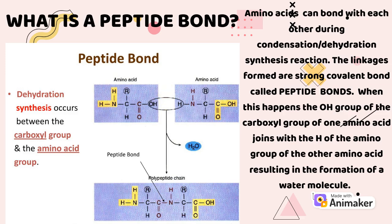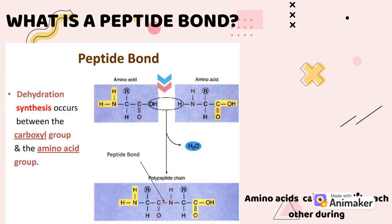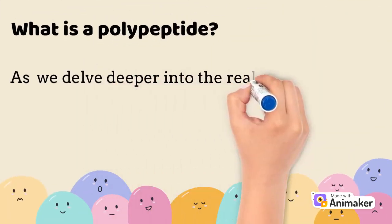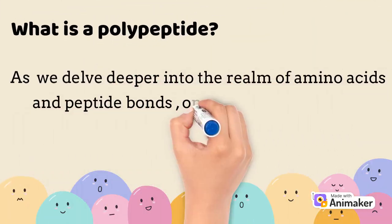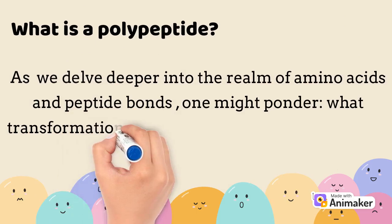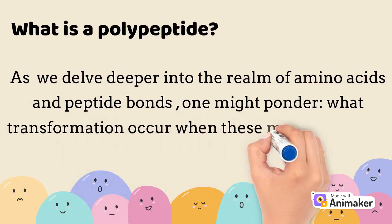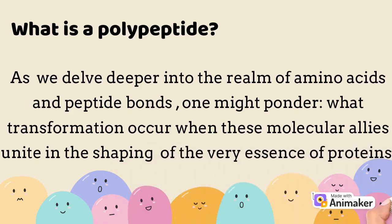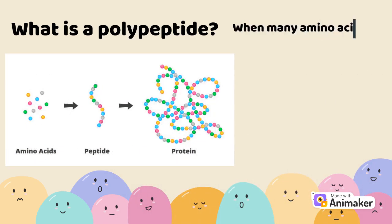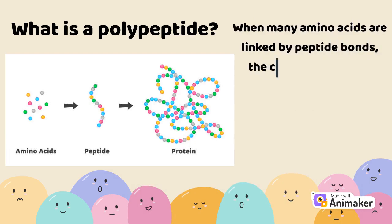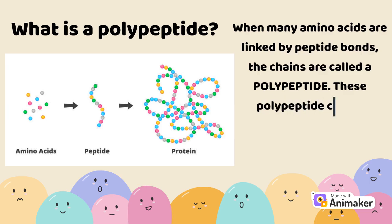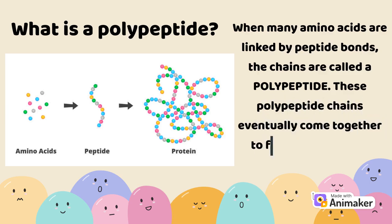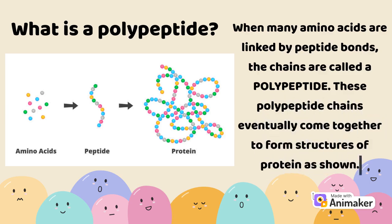Observe the diagram. Do you understand what is taking place? As we delve deeper into the realm of amino acids and peptide bonds, one might ponder what transformations occur when these molecular allies unite in the shaping of proteins. When many amino acids are linked by peptide bonds, the chains are called a polypeptide. These chains eventually come together to form structures of protein, as shown.